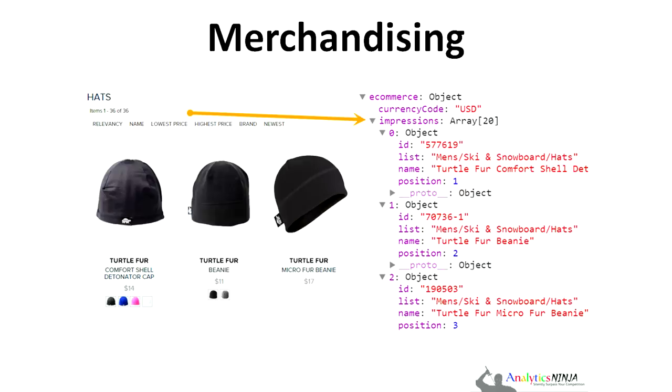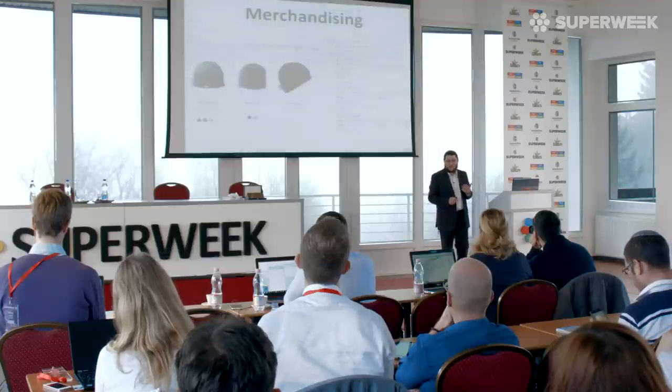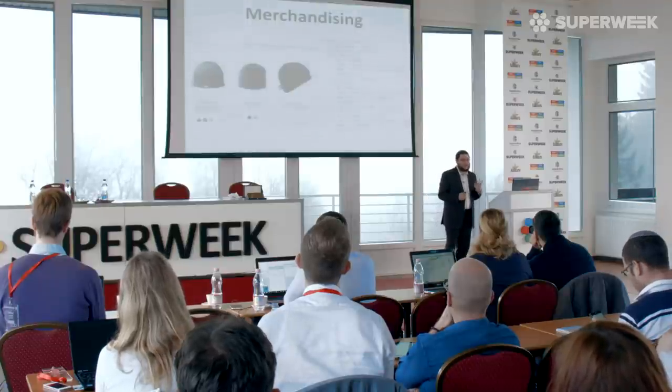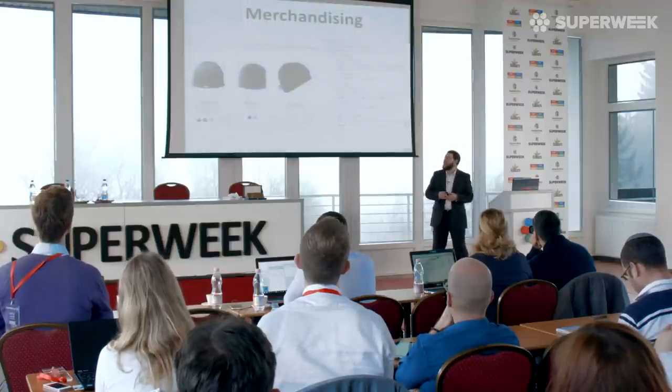With enhanced e-commerce, one of the things that is really nice technically about the platform is that it's able to do impressions. There's a whole new scope of data. Until now there was user-level data, session-level data, and hit-level data. Now there's another data scope in Google Analytics known as product data.